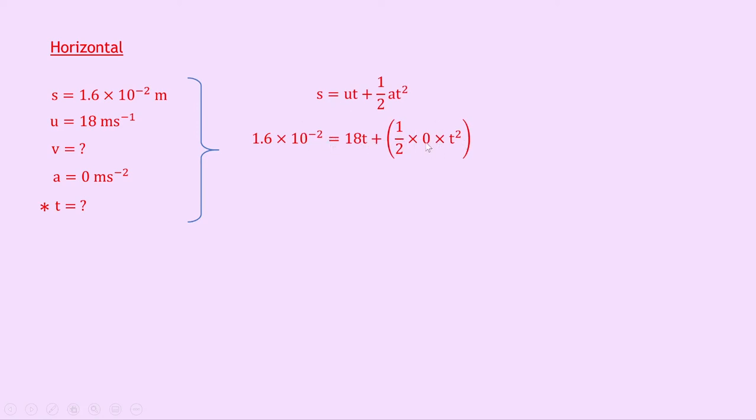So notice we've got this times by 0 in here, which means we can get rid of this whole term here. So we end up with 18t equals 1.6 times 10 to the minus 2. I've just swapped the sides there. And then we can divide both sides by 18 to get t on its own. So we get t equals 1.6 times 10 to the minus 2 divided by 18 equals 8.9 times 10 to the minus 4 seconds.